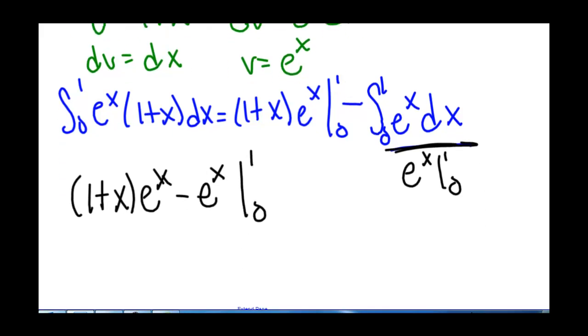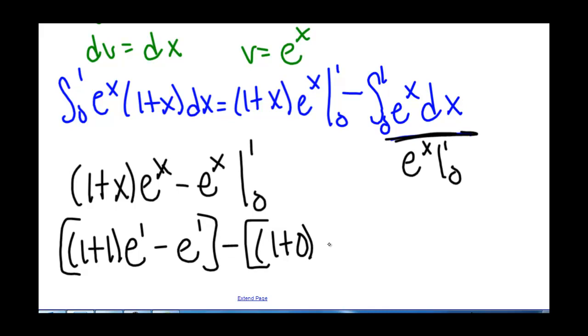So plugging in 1, we get 1 plus 1 times e minus e minus the whole quantity when we plug in 0: 1 plus 0 times e to the 0 minus e to the 0.